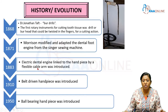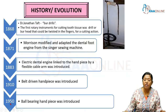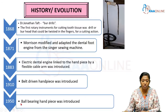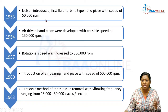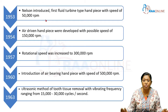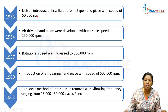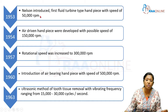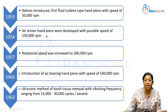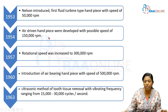In 1910, the belt-driven handpiece was introduced. In 1950, the ball bearing handpiece was introduced. In 1953, Nelson introduced the first fluid turbine type of handpiece, which had an RPM of around 50,000. In 1954, the air-driven handpiece was developed with a greater speed of around 150,000 RPM, which had superior cutting efficiency.